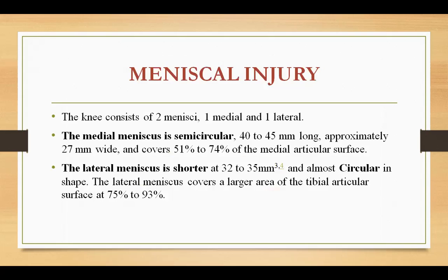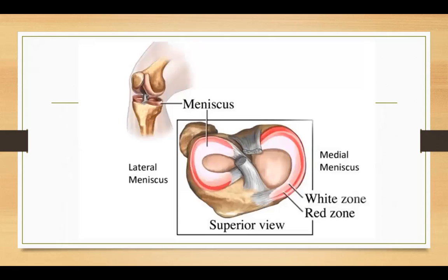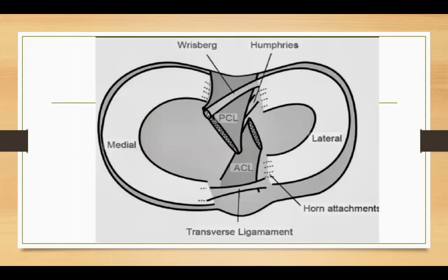The next topic is meniscal injury. The knee consists of two menisci: the medial meniscus and the lateral meniscus. The medial meniscus is almost semicircular and the lateral meniscus is shorter and near-circular. There are different zones: the red zone is vascular and the white zone is avascular. The medial and lateral menisci are connected by the transverse ligament.